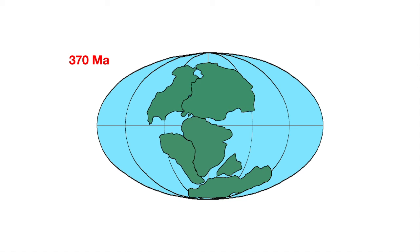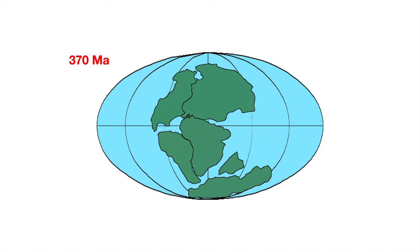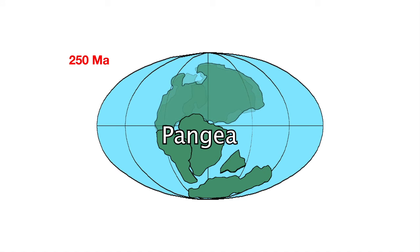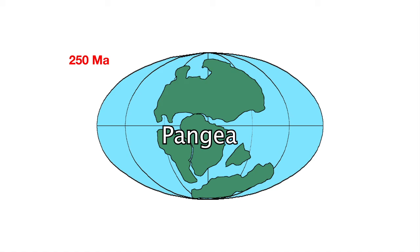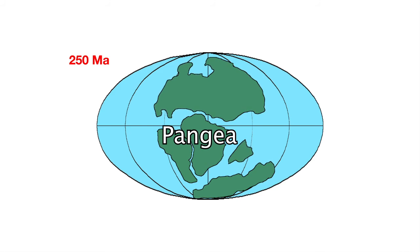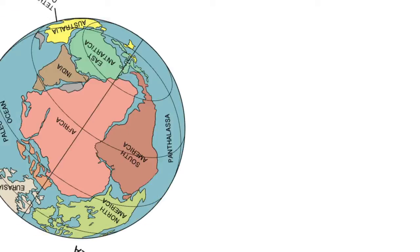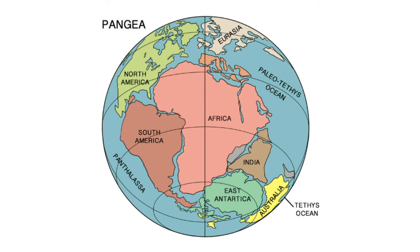We are now going to move to 250 million years ago. At this time, the Appalachian Mountains were forming between North America and Gondwana, creating the supercontinent known as Pangaea. The word Pangaea means "all earth" in Greek.